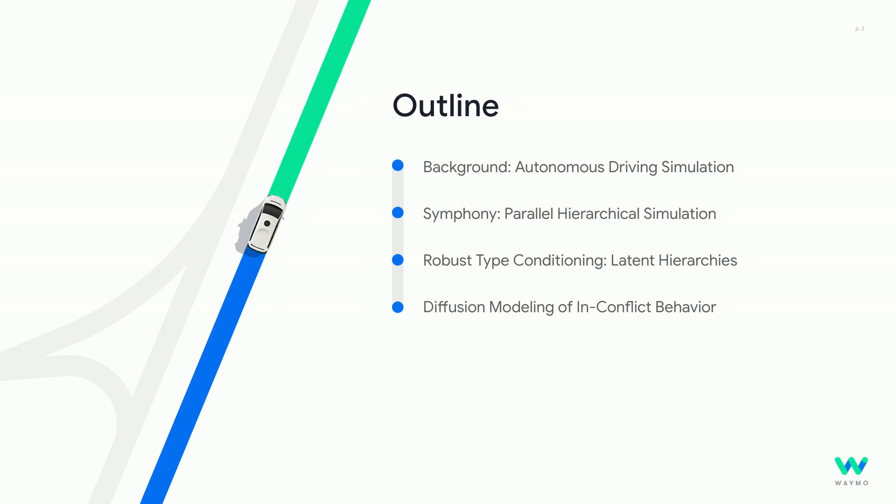I'm going to start by giving some background about autonomous driving simulation — what it is and why it's important. Then I'll talk about Symphony, a parallel and hierarchical framework for simulation. Then I'll talk about how we can extend these approaches to more robust and flexible latent hierarchies. And finally, I'll discuss some new work that hasn't even been published yet about using diffusion models for the tricky case of simulating in-conflict behavior.